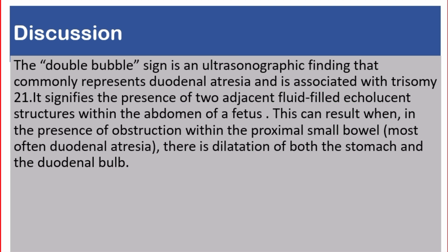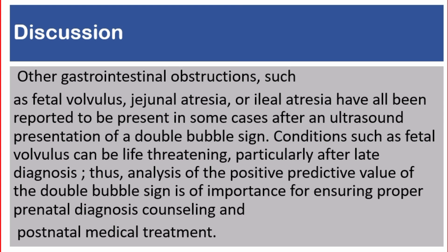The double bubble sign is an ultrasonographic finding that commonly represents duodenal atresia and is associated with trisomy 21. It signifies the presence of two adjacent fluid-filled echolucent structures within the abdomen of a fetus. This can result when, in the presence of obstruction within the proximal small bowel — most often duodenal atresia — there is dilatation of both the stomach and the duodenal bulb. Other gastrointestinal obstructions such as fetal volvulus, jejunal atresia, or ileal atresia have all been reported in some cases after an ultrasound presentation of a double bubble sign.